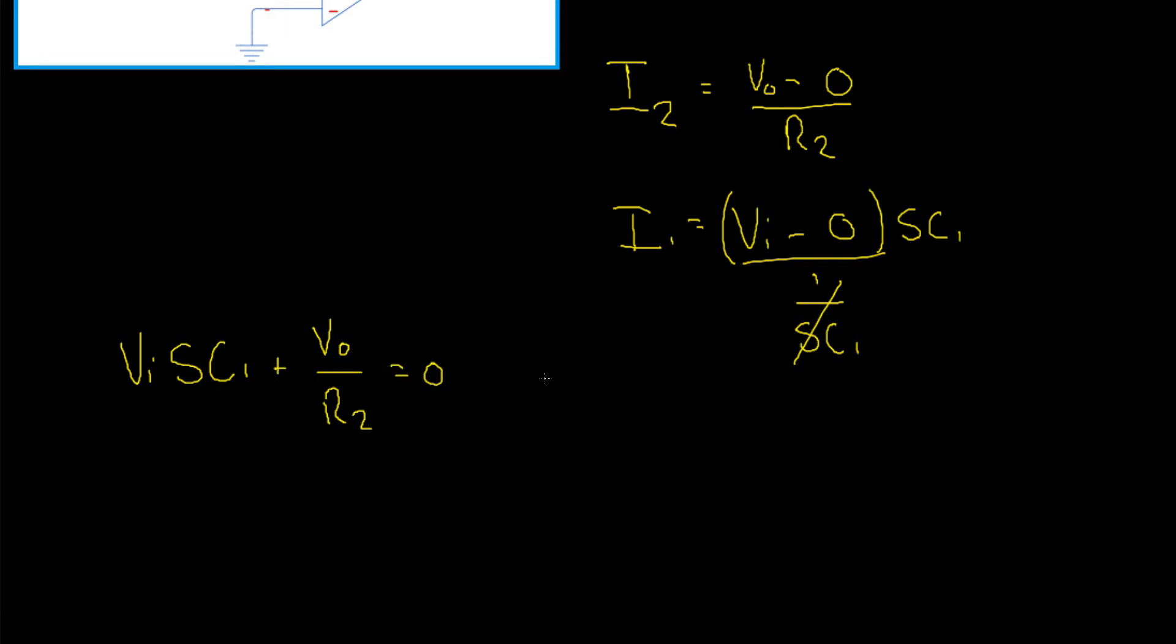Now, as we're solving for VO divided by VI, let's multiply through by R2 and remove that denominator. So, after multiplying through by R2, we have VI SC1 R2, plus VO. The R2s cancel, and then we're left with equals 0.